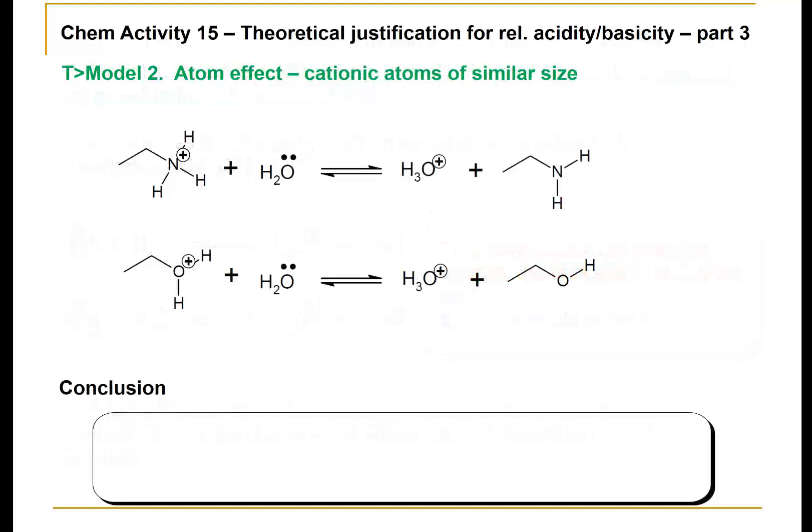First of all, the atom effect, but here we're looking at cationic atoms of similar size. The classic example is to compare nitrogen and oxygen: a protonated amine versus a protonated alcohol. Now we have a positive charge. Usually for atoms the same size, we'll want to think about electronegativity. The atom that has a higher electronegativity will be less stable, while the atom with a lower electronegativity will be more stable.